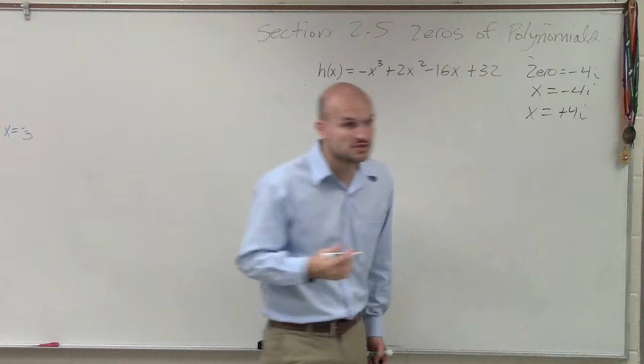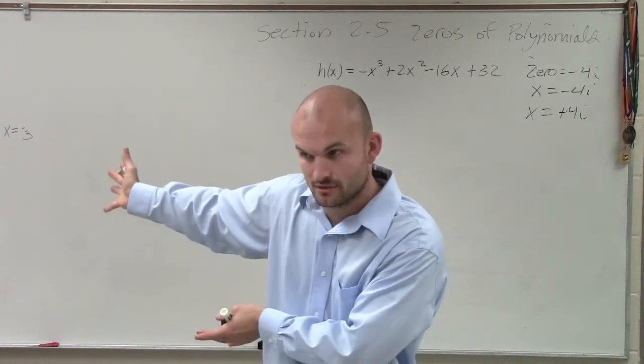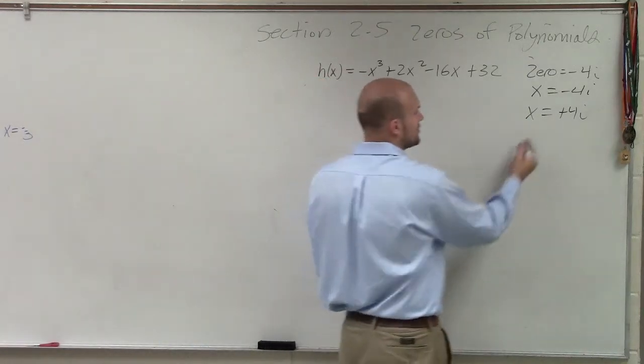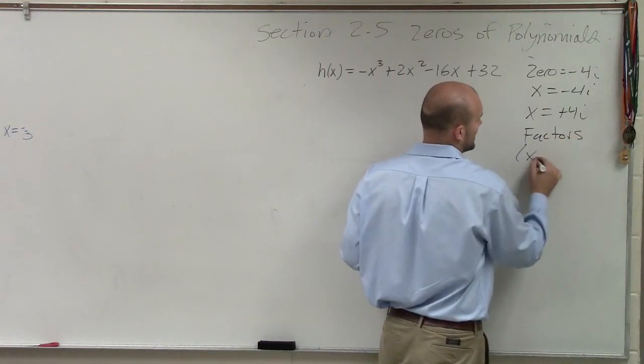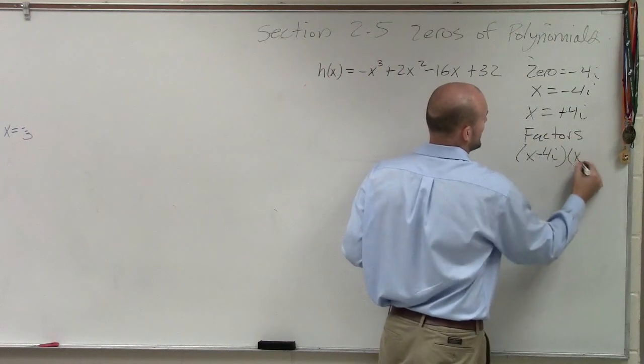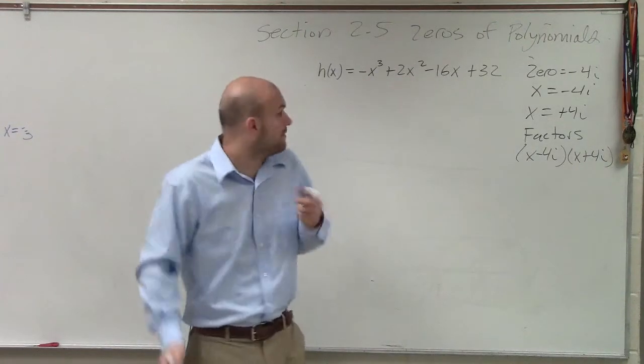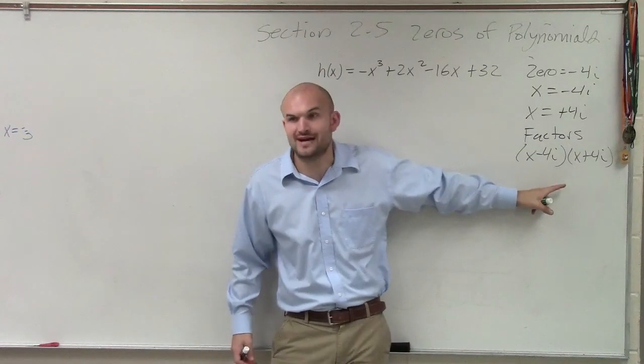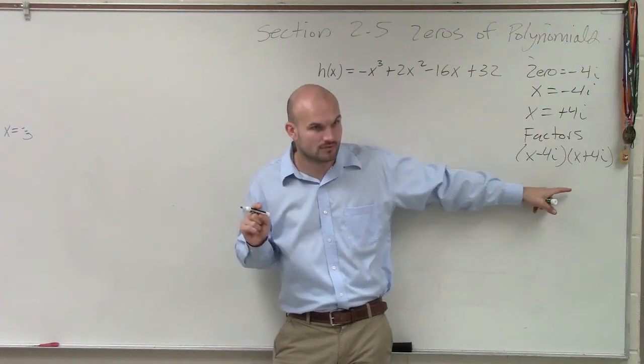Now, if those are our zeros, just like the problems up there, we know we can write the factors. So I can set these equal to zero, but the factors are going to be (x - 4i)(x + 4i). Those are the two factors I know right now, but this polynomial is to the third degree, so I know those are not the only two factors. There's one more zero that I'm missing, or one more factor that I'm missing.